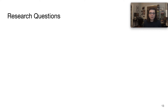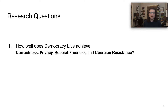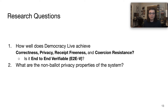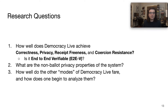So with all this in mind, we really wanted to know: first, how well does Democracy Live achieve those cryptographic goals, including correctness, privacy, receipt-freeness, and coercion-resistance? Second, is the system actually end-to-end verifiable? This is an internet voting system after all, and that's generally seen as a requirement for such a system to work. Third, what are the non-ballot privacy properties in the system? Because a voting system inherently gets a lot of information about voters, and it would be very useful to know exactly how it treats voter data. And finally, how well do the other modes of Democracy Live fare, and how does one even begin to analyze them?